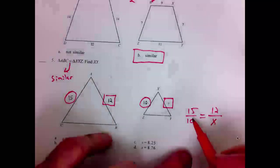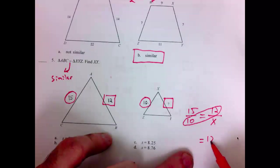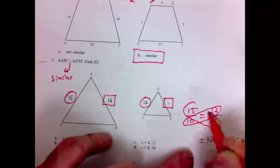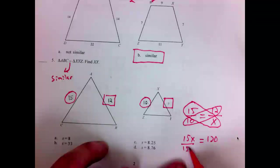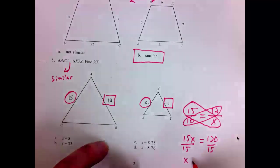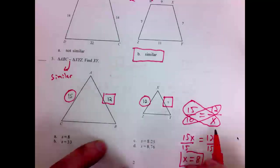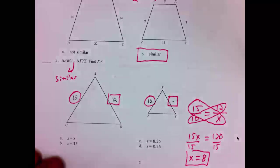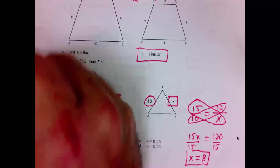Now, I will cross multiply. 10 times 12 is 120. 15 times X is 15X. Dividing both sides by 15. X equals. Dividing 120 by 15, that will be 8. X is 8. The answer on number 5 is A.